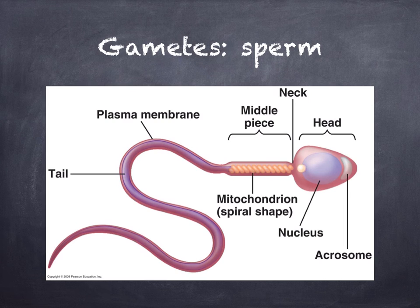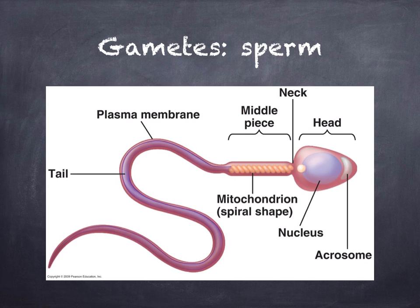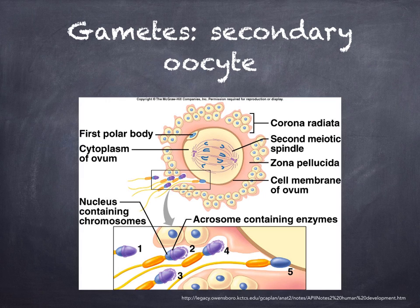The male and female gametes are quite different in mammals. Sperm are very small, motile, and produced in vast numbers. They have large numbers of mitochondria to provide energy in the form of ATP, which is used to move the flagellum and also to produce enzymes of the acrosome. The secondary oocyte is a larger, non-motile, food-storing cell and is produced in much smaller numbers.